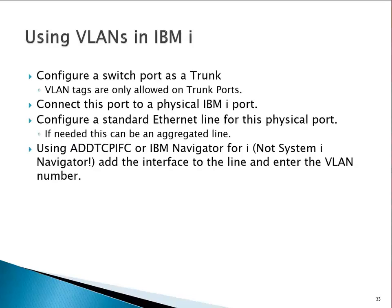To use VLANs, you configure the switch port as a trunk and connect it to a physical IBM i port. Configure a standard ethernet line — there are no settings on the ethernet line to configure for VLAN tag support. That configuration is done in the ADDTCPIFC command, or in IBM Navigator for i — not the old, deprecated navigator, it's not available there.